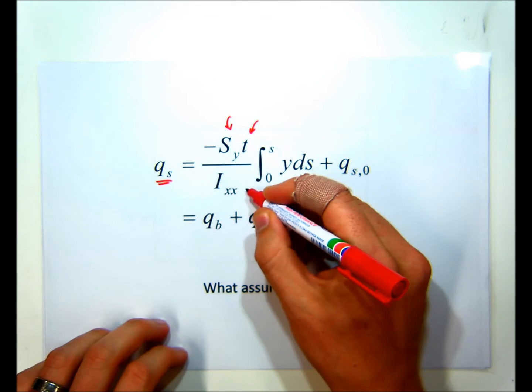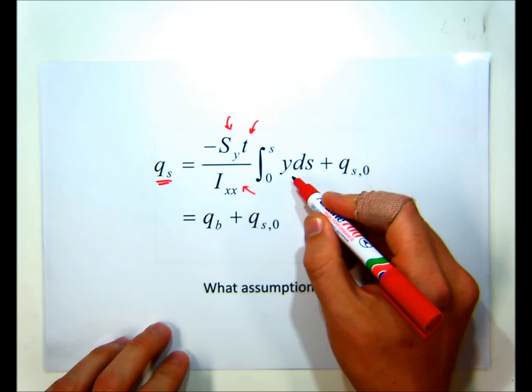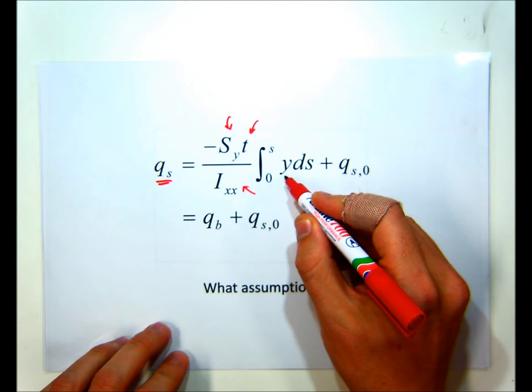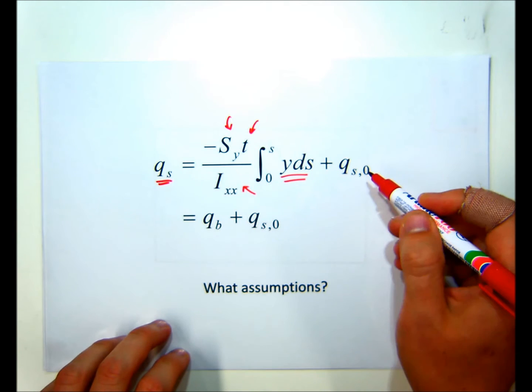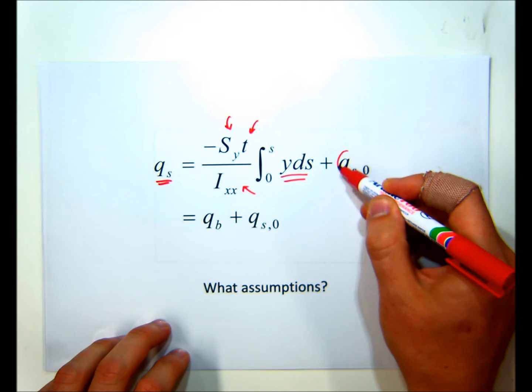the Ixx, which you know how to calculate now, the geometry of the section, which is in here, and there's the constant shear flow,